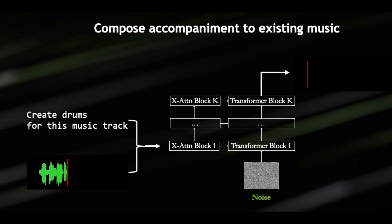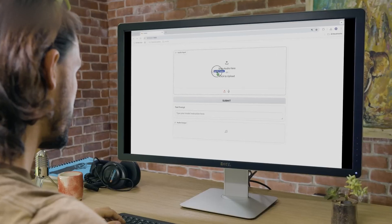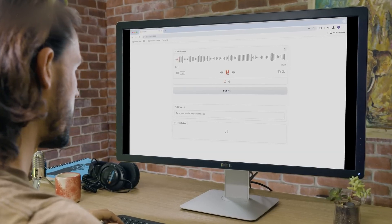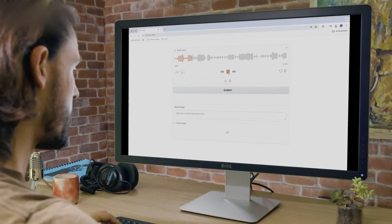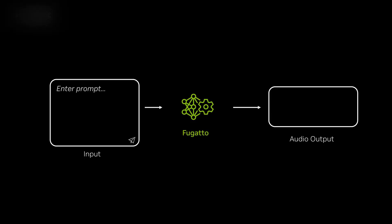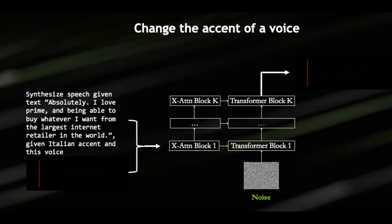Let's say you have a voice and you want to use the same voice, but with another text. Fugato can even do that for you, and it even works if you need that voice with an entirely different accent. Take a look at this clip of Fugato taking a voice and using it to generate a new speech audio.